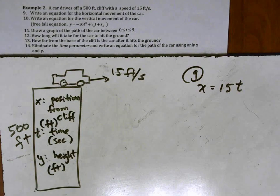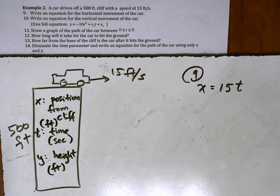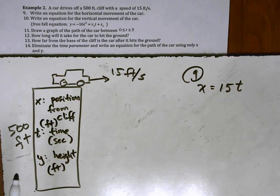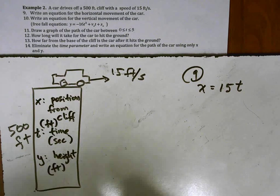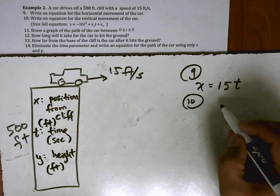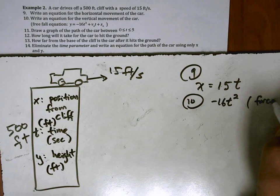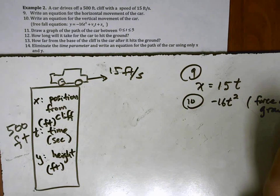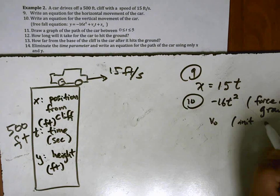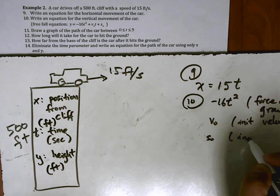Now number 10 here says that we want to find an equation for the vertical movement of the car. We're going to use this free fall equation y equals negative 16 t squared plus v sub zero t plus s sub zero. For number 10 this is kind of review from physics and that's really where that equation comes from. In this case negative 16 t squared, this is the force of gravity. This is something that's derived in physics. V sub zero is the initial velocity and s sub zero is the initial position.